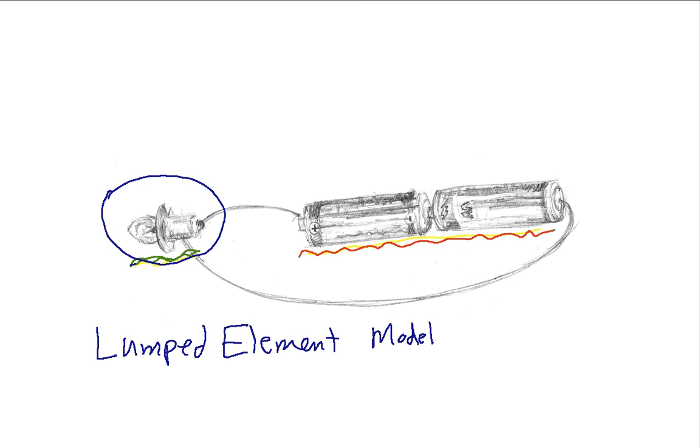A lumped element model basically takes all of the components and considers each component as a single entity. So the light bulb would be one entity here and the batteries would be a second entity here. And the wires that connect the light bulb with the batteries, we don't really think about. They end up being what we call perfect conductors. We'll talk about what that implies in later videos.